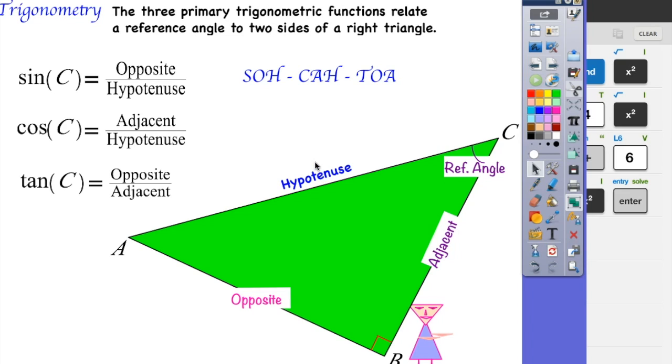Okay, so whenever we take a reference angle, it's never going to be the 90-degree angle. It's always going to be one of the acute angles.